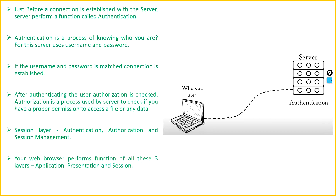Your web browser itself functions at three different layers. When you go to www.facebook.com you use HTTP and HTTPS protocol — that is the application layer. When you log in with a username and password, that is authentication — the session layer. Once authenticated, what you are permitted to access is authorization. So the web browser performs application layer, presentation layer, and session layer functions.